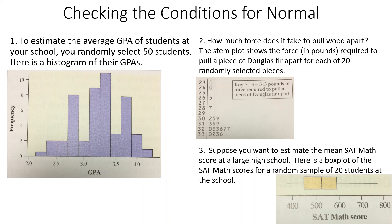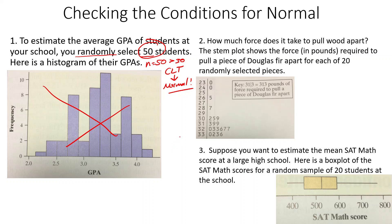Here are three examples of checking only the normal condition. First: to estimate the average GPA of students at your school, you randomly select 50 students, and here's the histogram of their GPAs. The distribution has some peaks and valleys — maybe trimodal — but it doesn't look strongly skewed. The key point is: we don't even care what the graph looks like here, because n equals 50, which is greater than 30. The Central Limit Theorem tells us it's going to be normal, so we don't even have to look at the graph.